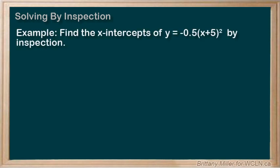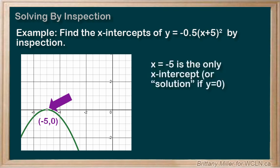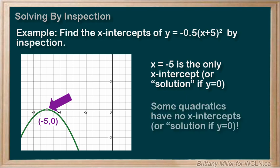What about the function -0.5(x + 5)²? Well, this function only has one solution. Its vertex is the only point that touches the x-axis, so x equals -5 is the only x-intercept. Remember that you can even have zero solutions if the parabola doesn't cross the x-axis.